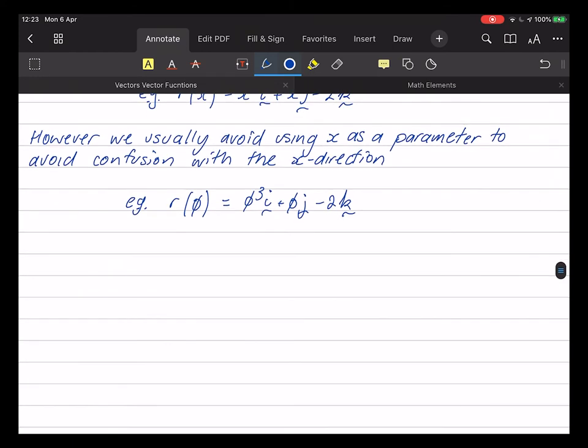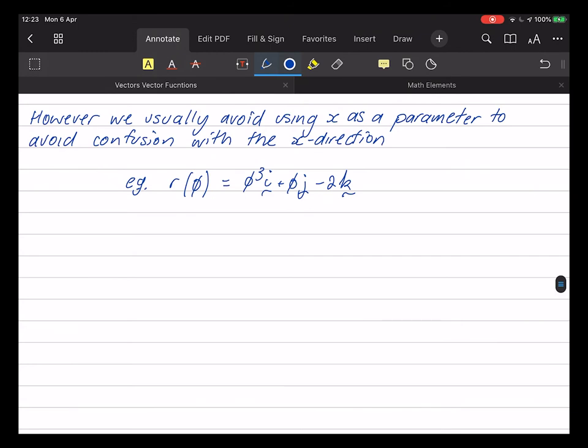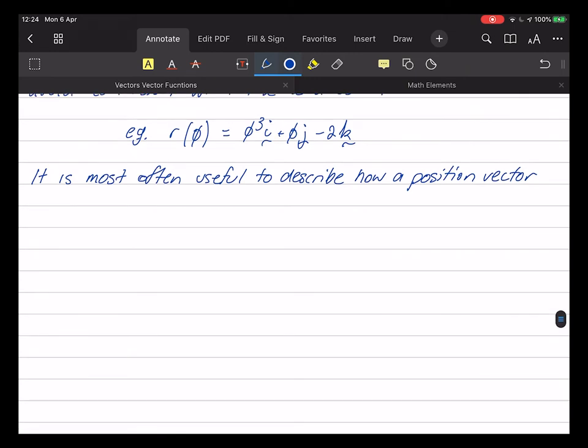All right. So, vector function. But most often in our application, we're going to use it for time. The parameter will be time. So we want to see how position vector changes over time. So it is most often useful to describe how a position vector changes with time.